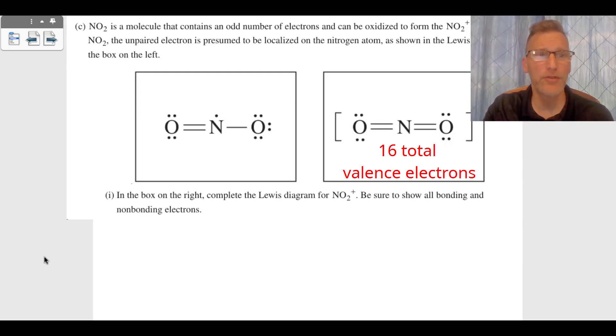That moves us to question C. Question C goes to a Lewis dot structure. They gave us the Lewis dot structure of NO₂, and you can see there's an unpaired electron on that NO₂. They want to know NO₂ plus one. We count up our total valence electrons. Nitrogen has five valence electrons, each oxygen is six.